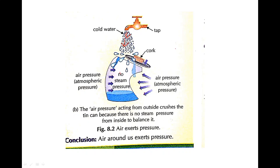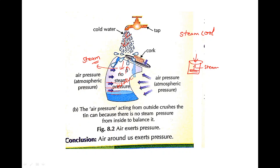When we cool the steam, the steam condenses. The steam inside turns back to water, so the air pressure inside the can drops. The outside atmospheric pressure is now greater and is no longer balanced by the inside pressure, so the can gets crushed due to the greater outside air pressure. This demonstrates that air exerts pressure.